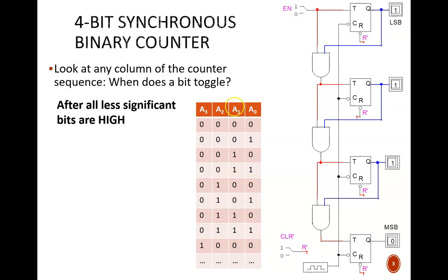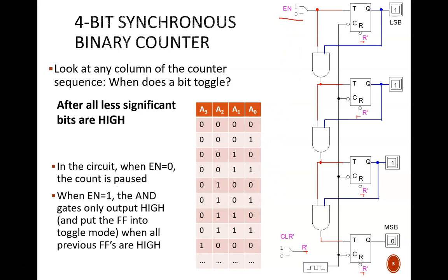It is also true for a1, but the only lesser bit is a0. And as usual, a0 depends on no other bits. It should toggle on every clock cycle. We also have one extra wrinkle in this design, the enable switch. It is not necessary, but it is a nice feature.